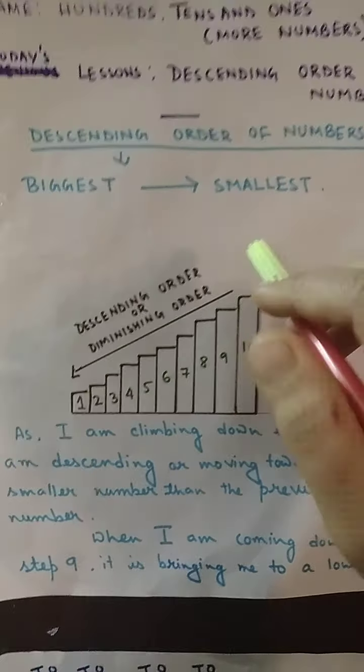The next example is 75, 96, 82, and 61. Here the numbers in the 10s place are quite different: 7, 9, 8, and 6. The biggest is 9, so 96 comes first. Then 82 comes second, then 75 third, and finally 61 is my lowest number. Hence this set of numbers is arranged in descending order.